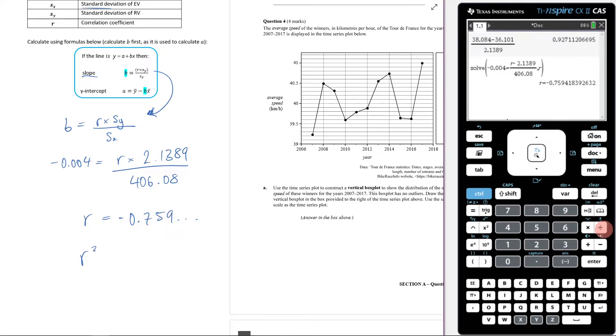Now my r squared is simply going to be, I'm going to open up a pair of brackets, I'm going to put in the r value, I'm going to close the brackets, I'm going to square it. It's going to leave me with 0.5767.